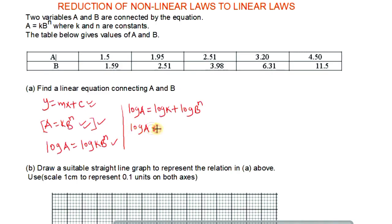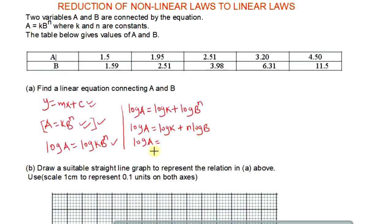Applying the power law of logarithms, the exponent n comes down as a multiplier, giving us: logarithm of a equals logarithm of k plus n times logarithm of b. Rearranging this, we can write: log a equals n log b plus log k, placing the n log b term first.